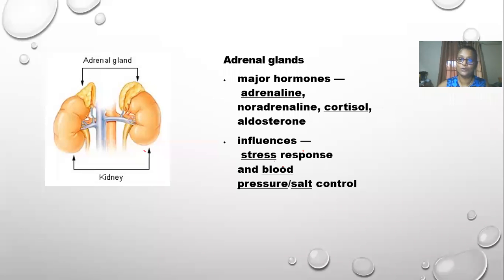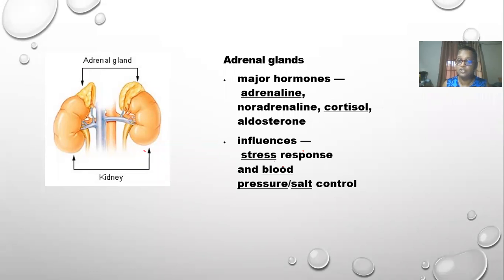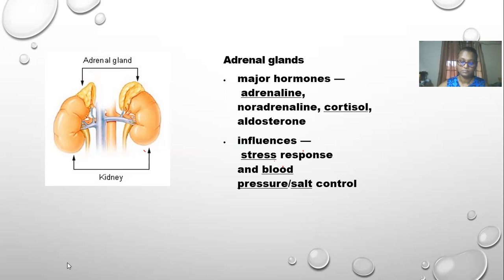The adrenal glands release cortisol, the stress hormone that relaxes the body, along with the fight-or-flight response — adrenaline. When you get a fright, your blood starts to boil and you have the power to move even if you were fatigued two seconds ago. The major hormones are adrenaline, noradrenaline, cortisol, and aldosterone, influencing your stress response, blood pressure, and salt control. These glands are found on top of each kidney.